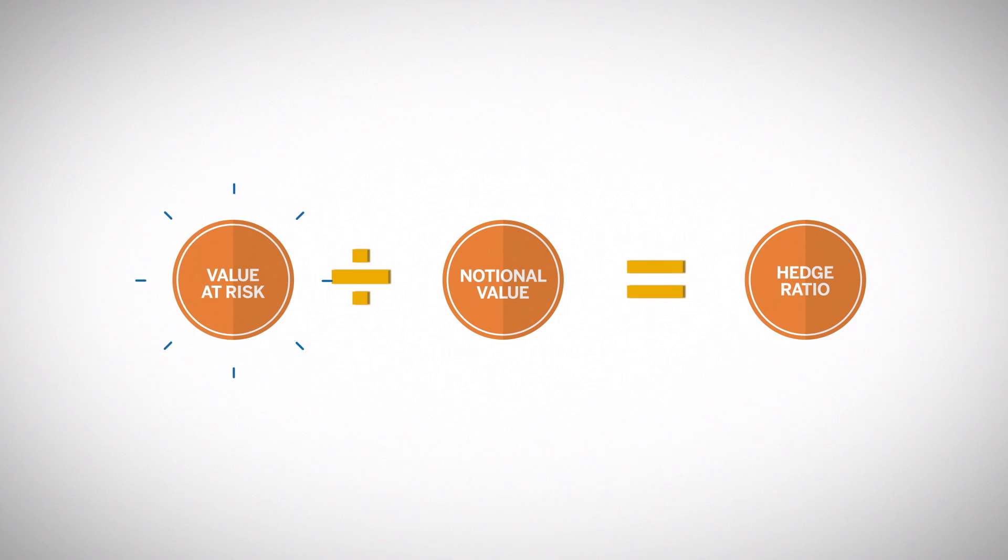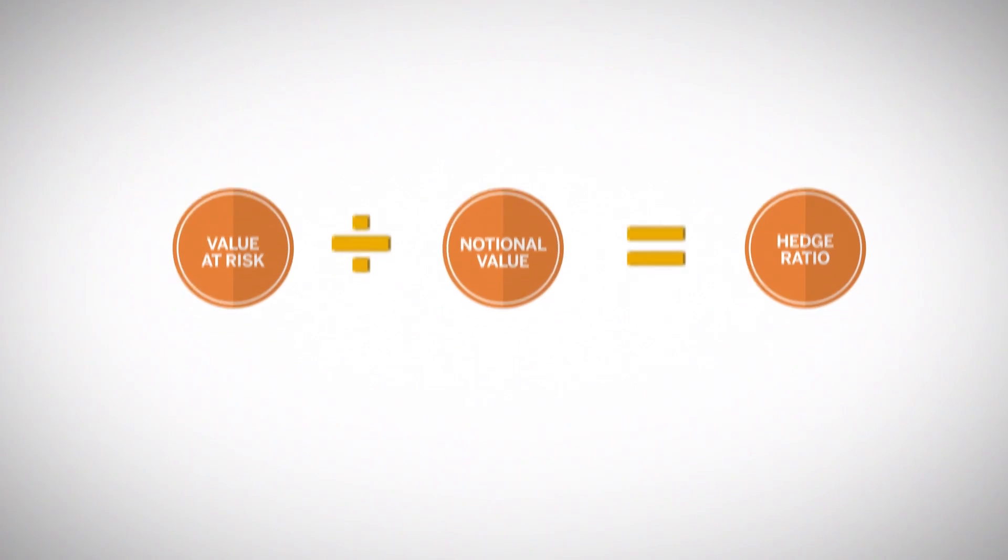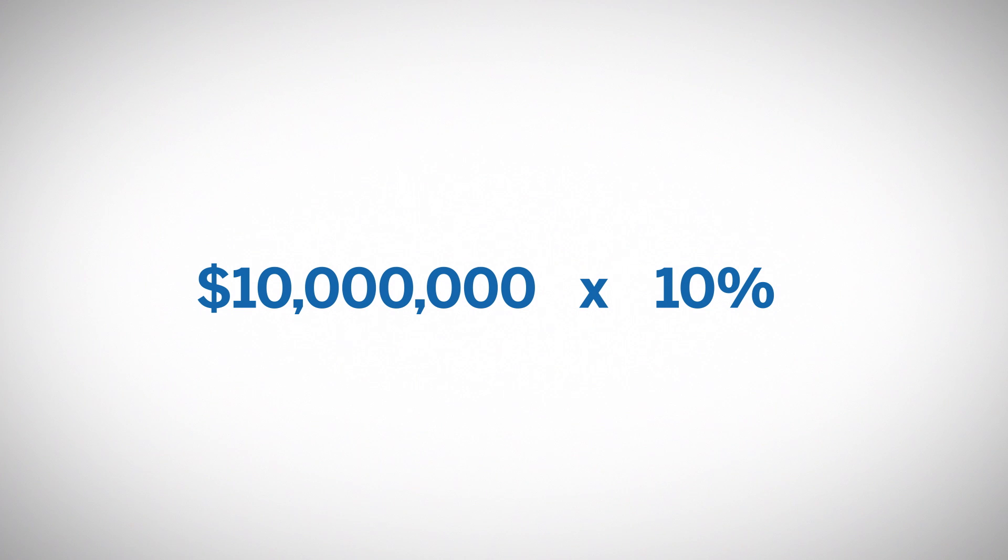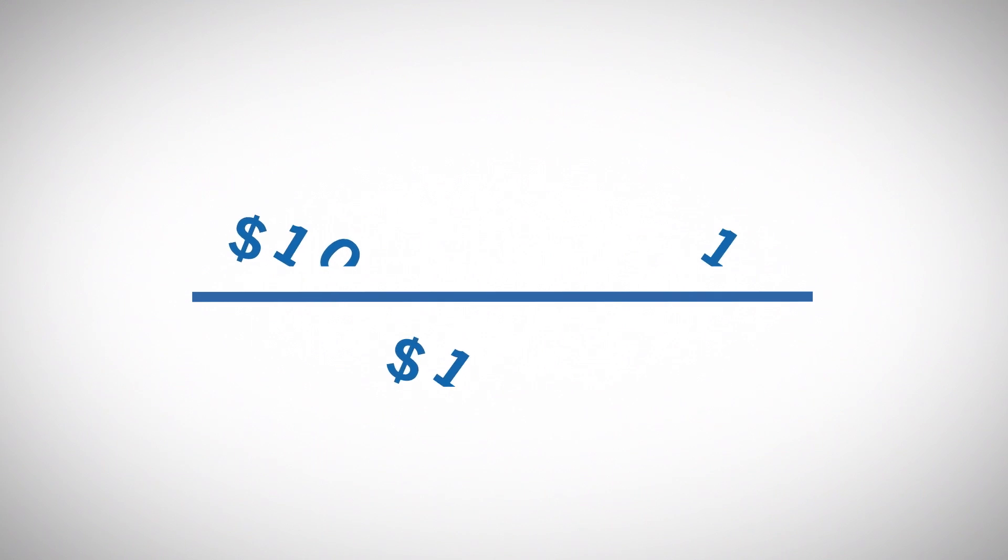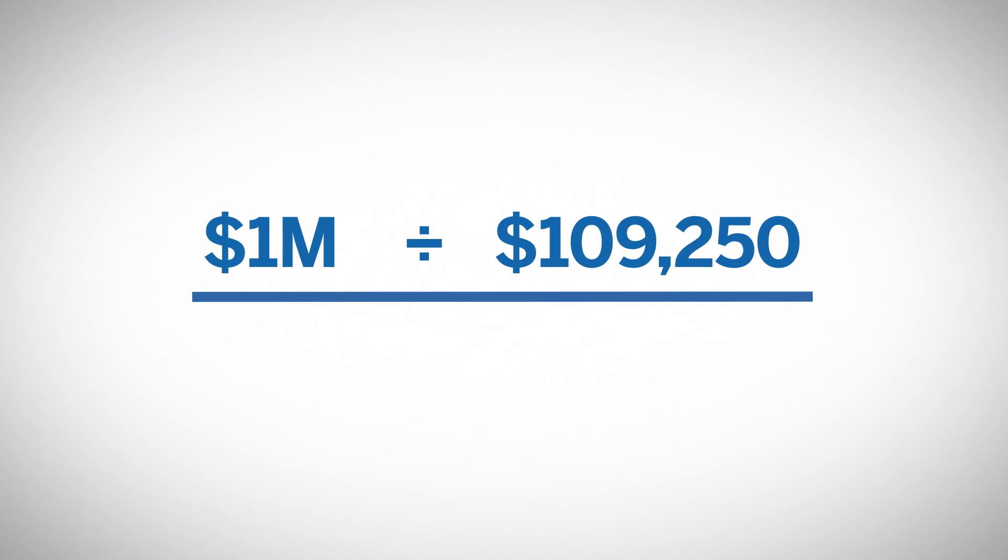In this case, value of the index to be hedged is 10% of $10 million, or $1 million. To calculate the equivalent futures contracts needed to hedge this position, divide $1 million by the notional value of the futures contract, which is $109,250. This equals 9.15, or the equivalent of 9 e-mini S&P 500 futures contracts.